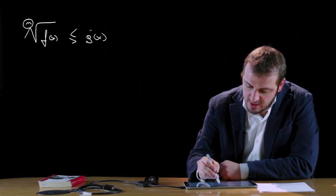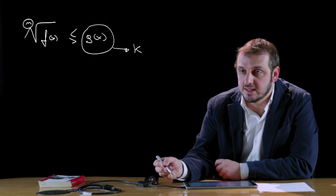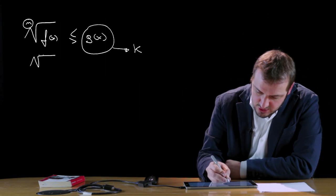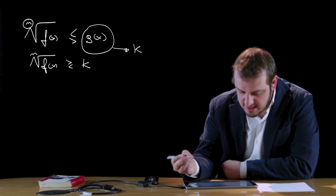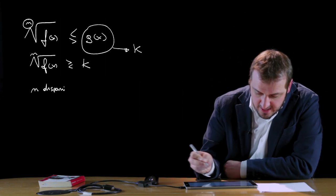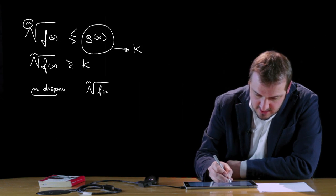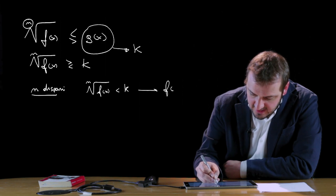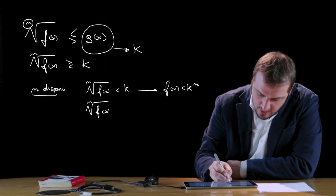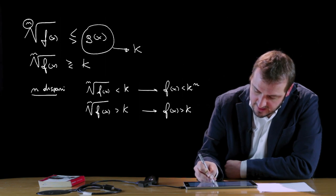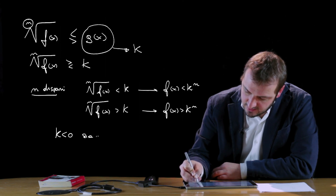Iniziamo con il caso forse più semplice, in cui g(x) non è una funzione ma è una costante k. Studiamo quindi il caso in cui la radice ennesima di f(x) risulta maggiore o minore di k, distinguendo n dispari da n pari. Se n è dispari, la disequazione radice ennesima di f(x) minore di k si trasforma elevando alla n primo e secondo membro, ottenendo f(x) minore di k alla n. Analogamente per il caso maggiore. Questo vale sia se k è minore di 0, sia se k è maggiore di 0.